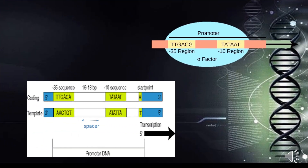This picture represents the promoter elements — the minus-35 element and the minus-10 element — and shows how the sigma factor binds to them. Specifically, sigma-4.2, the second conserved region within the fourth domain of sigma, recognizes and binds the minus-35 element. Sigma-2.4, the fourth conserved region in the second domain, binds the minus-10 element. When the sigma factor binds to these promoter elements, transcription initiation occurs. The sequences of the minus-35 and minus-10 elements are represented from the nucleotide sequences of the coding strand.